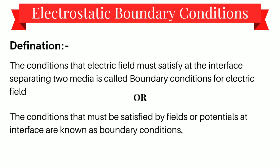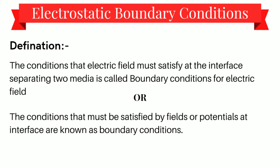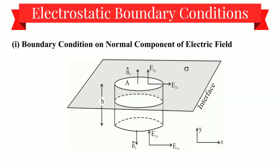Starting with the boundary condition definition: the condition that an electric field must satisfy at the interface separating two media is called the boundary condition of electric field. Simply put, the conditions that must be satisfied by the fields or potential at an interface are known as boundary conditions. Number one is the boundary condition on the normal component of electric field.